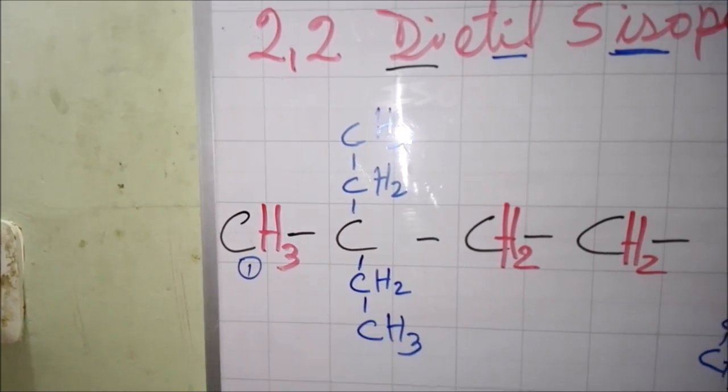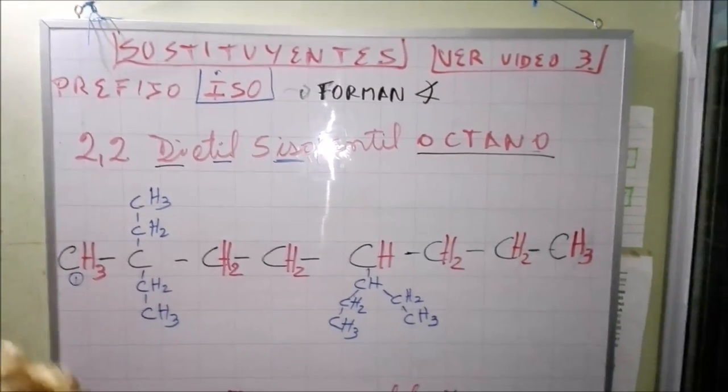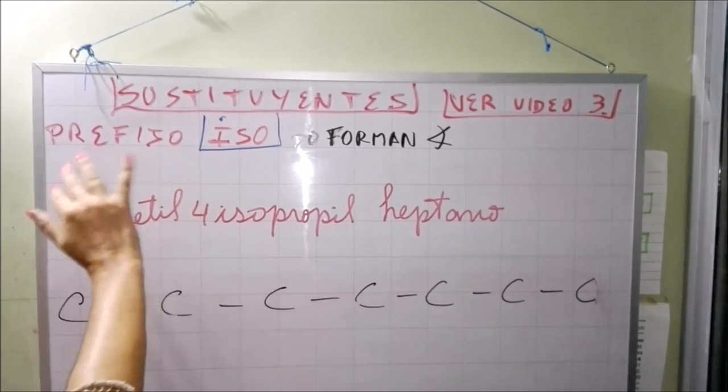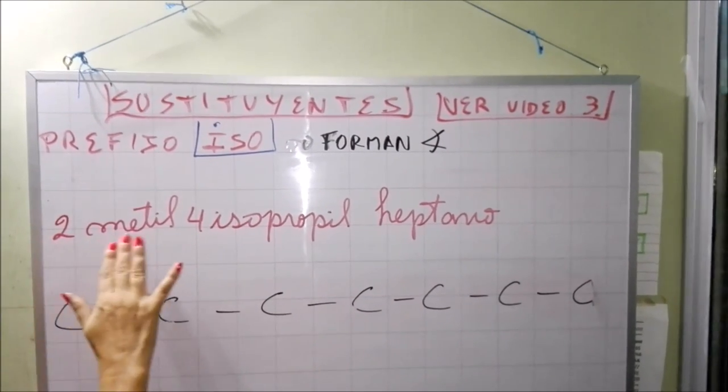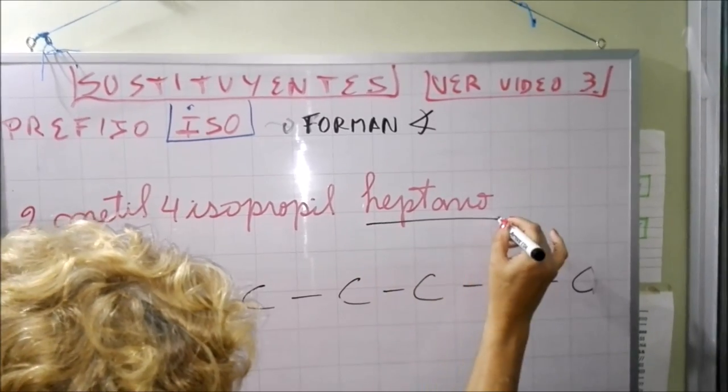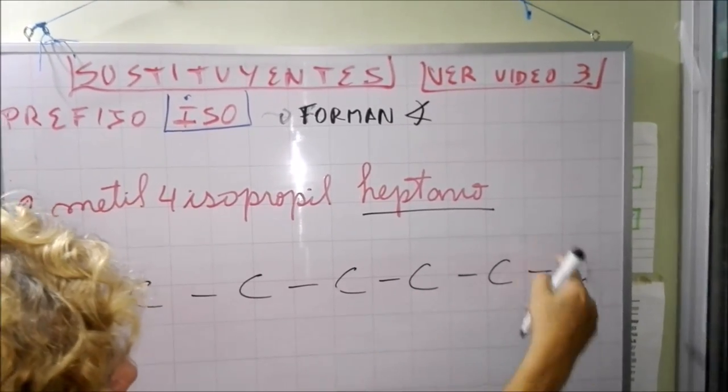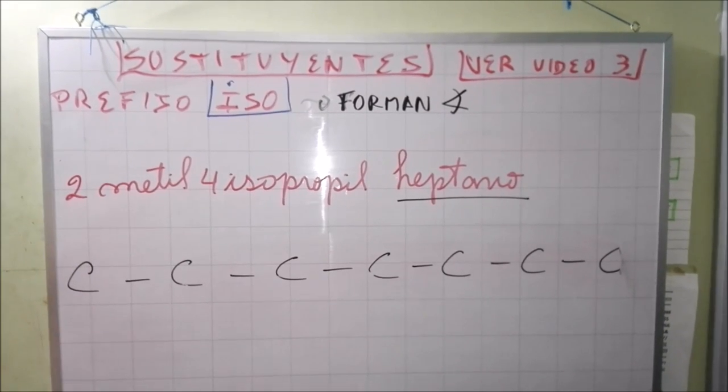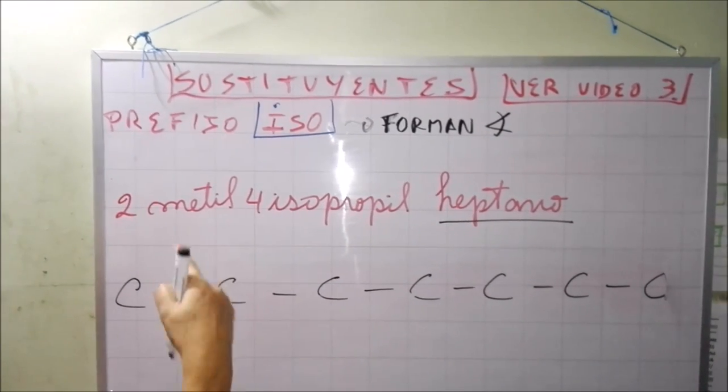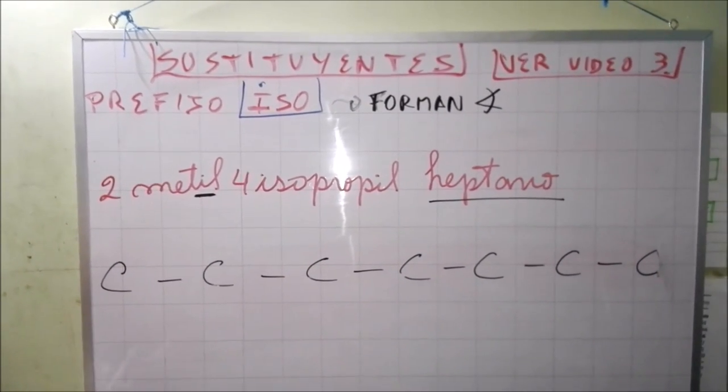Bueno ahora vamos a hacer otro ejercicio para que te quede claro los sustituyentes ISO. Vamos a hacer otro ejercicio del mismo sustituyente o prefijo ISO. Mira aquí yo voy a hacer el 2-metil-4-isopropil-heptano. Como hicimos en el ejercicio anterior, mira te recuerdo siempre la última palabra te nombra la cadena principal 1, 2, 3, 4, 5, 6, 7. Significa que tienes que tener 7 carbonos como cadena principal.